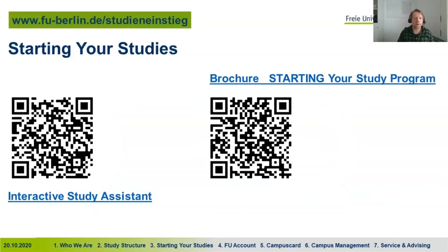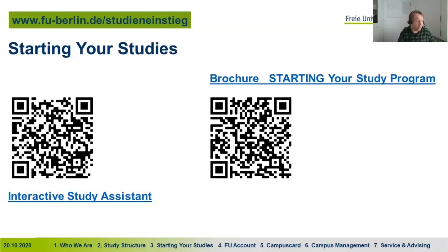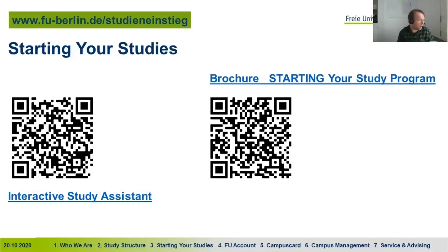Two QR codes give you links I'd recommend using at the start of your studies. On the left is the Interactive Study Assistant — a tool where you can browse, watch interviews with students and advisors, and access a checklist for the first weeks. On the right is a brochure with lots of information and deadlines on studying. You can download it as a PDF or pick up a printed copy at your department or at the Student Services Center at Ilter Straße 4.